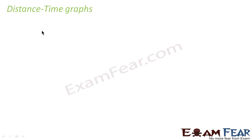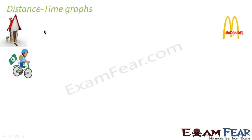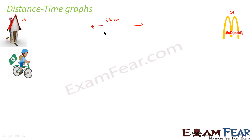We plot graphs of these quantities with respect to time. Let us take the same example where Ronnie is traveling from his home to McDonald's. The distance between his home and McDonald's is 2 kilometers, and Ronnie travels or covers this 2 kilometers in 2 hours.